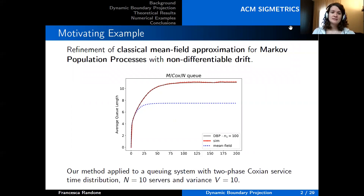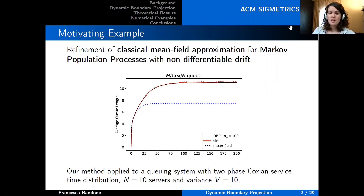Let me start by giving you some motivating example. We will present a refinement of classical mean field approximation for Markov population processes with non-differentiable drift. In the graph you can see the estimated average queue length for a queueing system with a two-phase Coxian service time distribution. There is a significant error between the mean field approximation and the stochastic simulation. This system has a non-differentiable drift, so classical refinements cannot be applied to it. However, our method, setting the hyperparameter N to a suitable value, allows to match almost perfectly the stochastic simulations.